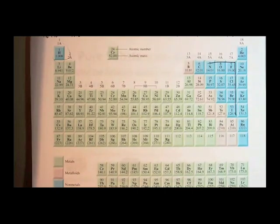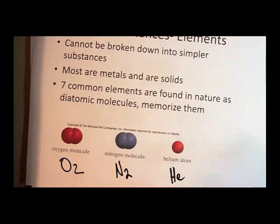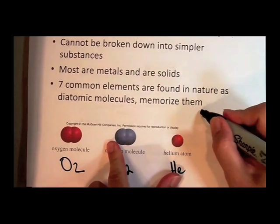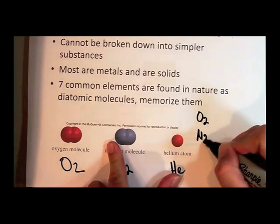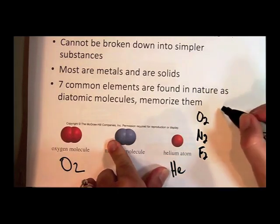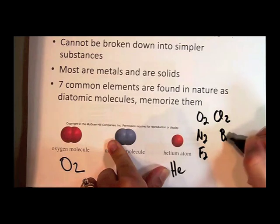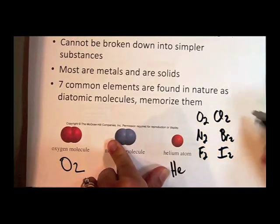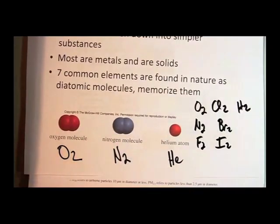When we write these elements, for example later when we look at chemical reactions, we always have to write them as they exist in nature: oxygen as O₂, nitrogen as N₂, fluorine, chlorine, bromine, iodine, and of course hydrogen. Those are the seven diatomic elements. All other elements can exist as single atoms in nature.